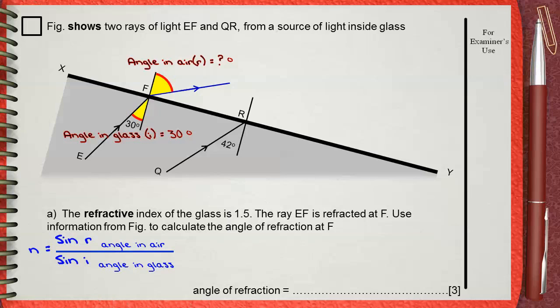Rearranging this equation, you get that sine R, which is the angle in air, equals sine I, which is 30 the angle in glass, times the refractive index. And this is sine 30 multiplied by 1.5. The result of this is 0.75.